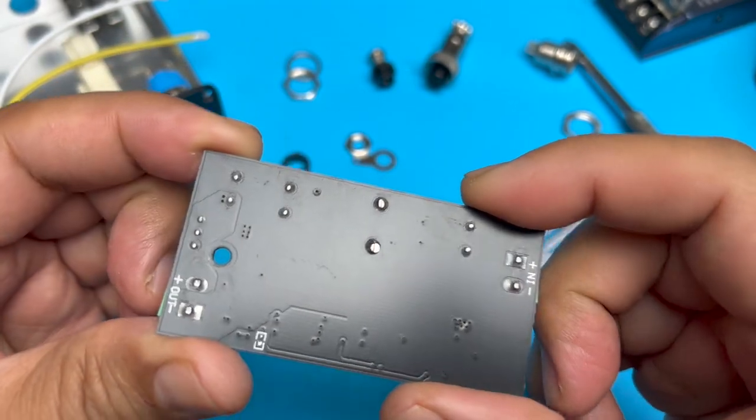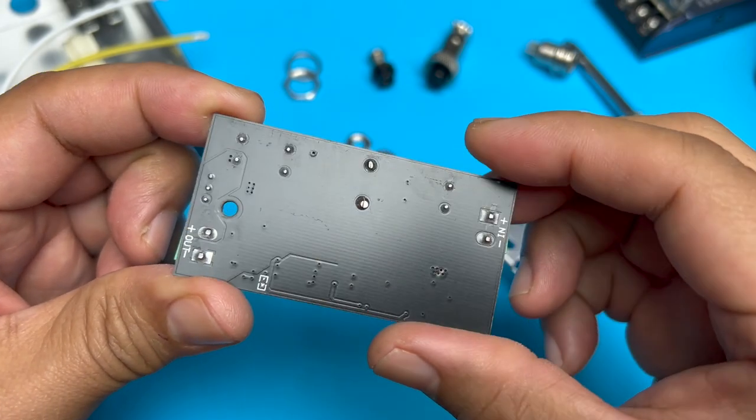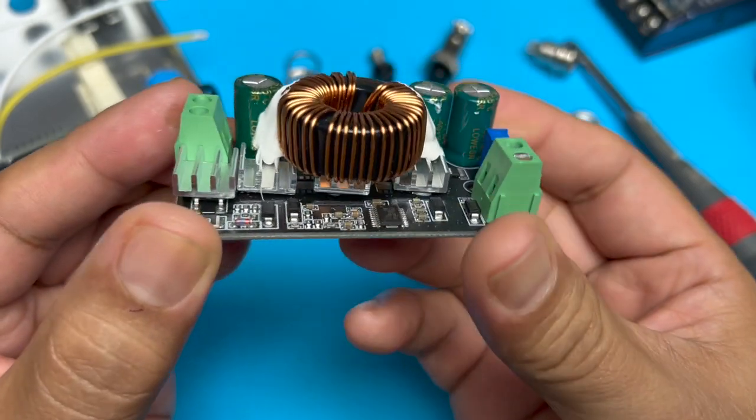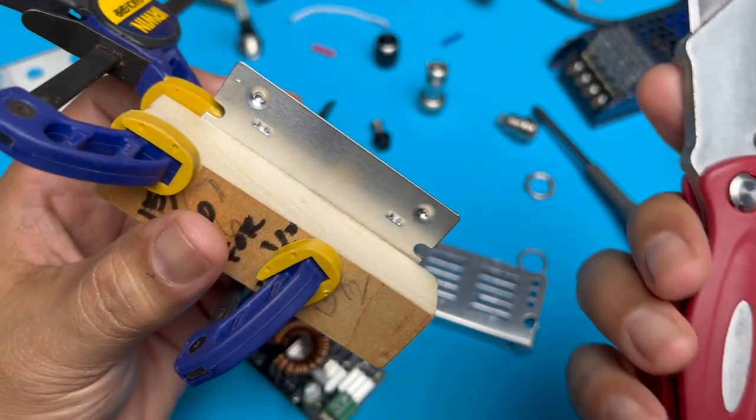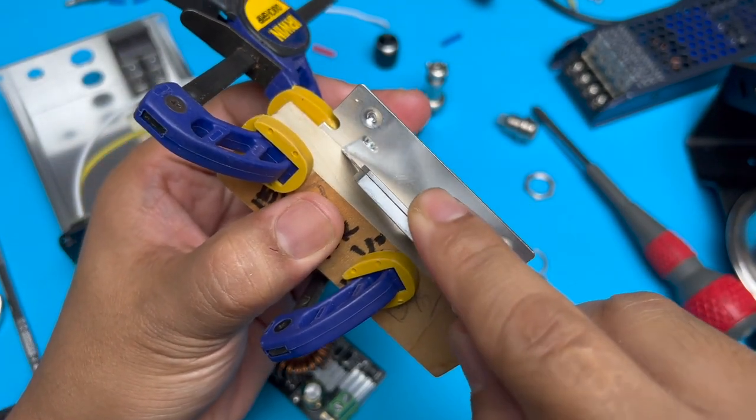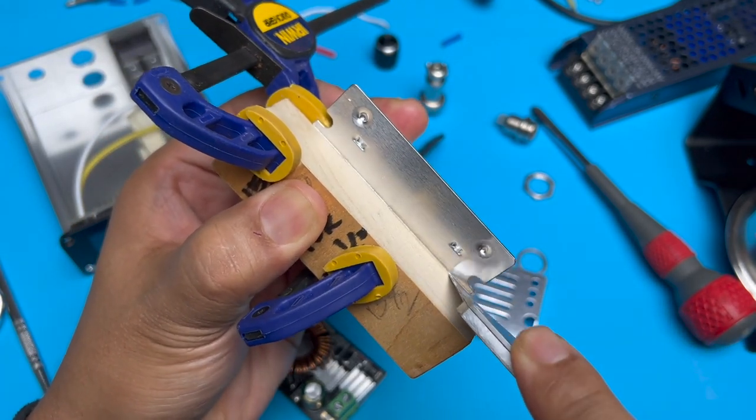The bottom of the power supply shows the polarity of the input and outputs. Scoring the aluminum case makes cutting easy.